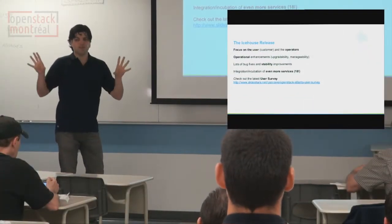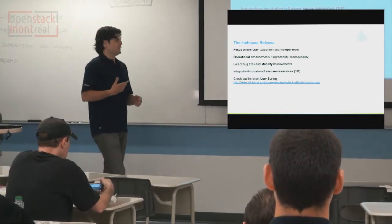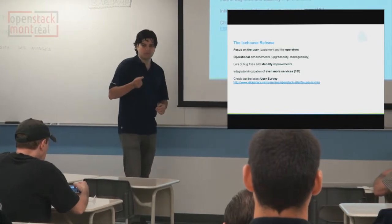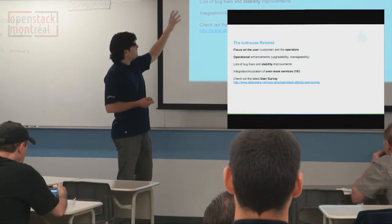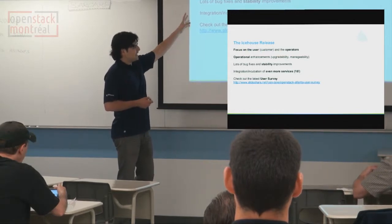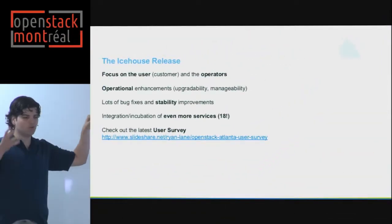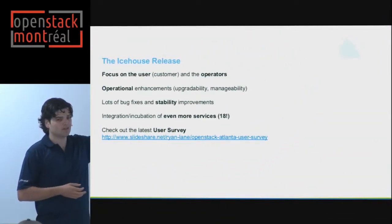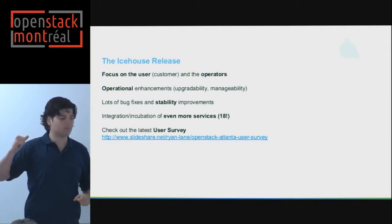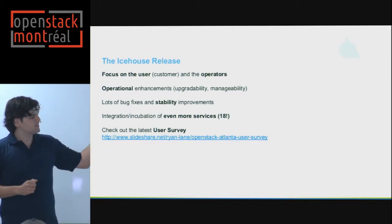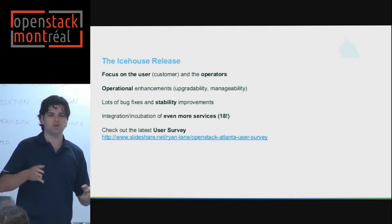The big picture: OpenStack right now is more than production ready — it's been fine-tuned to work more smoothly than before. There are a lot of bug fixes, it's more stable than ever, integrates around 18 services. If you're curious who is using OpenStack, click the link which will be posted on MontrealOpenStack.org — you'll see statistics, cluster sizes, even 10,000-node clusters.